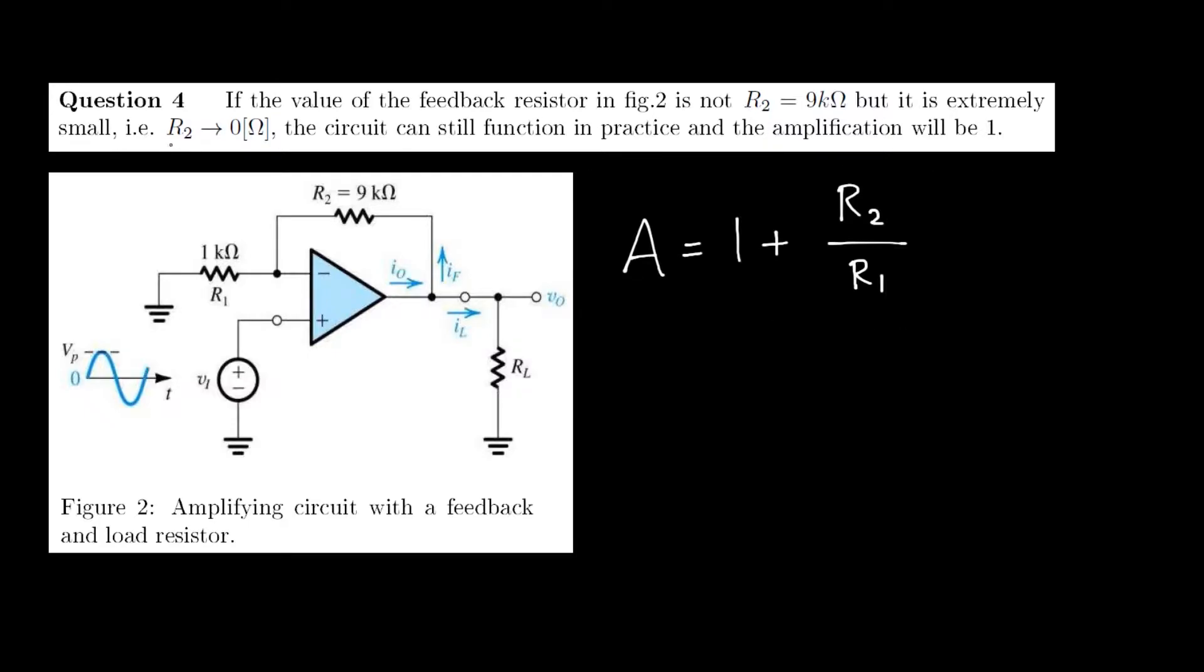In this question, R2 approaches 0, so as a consequence, the gain A is approximately 1 + 0/R1, which equals 1.